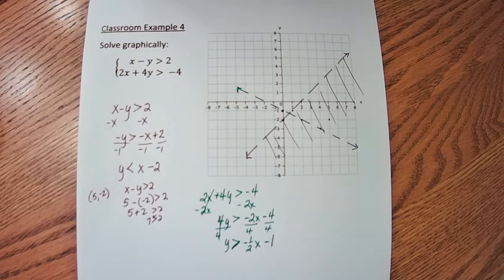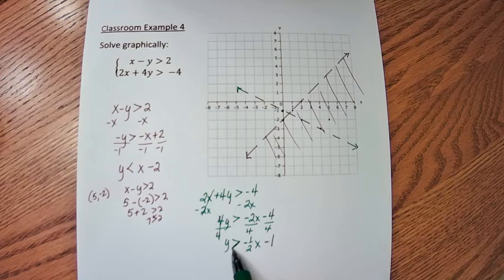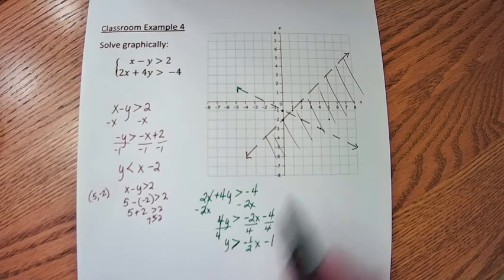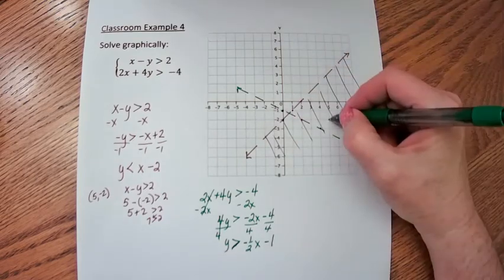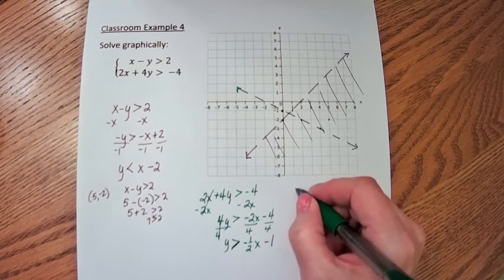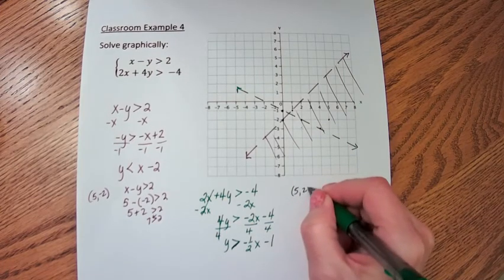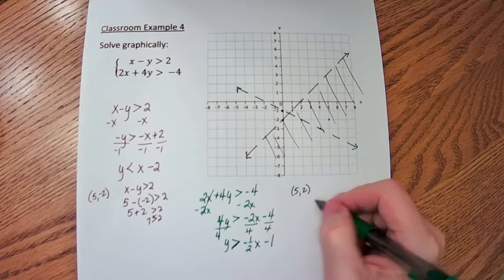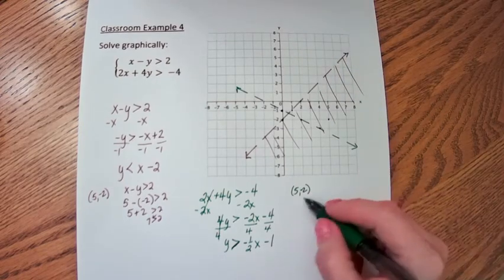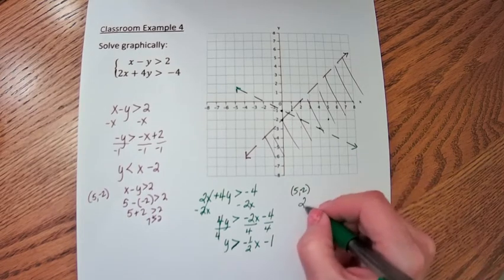Now we have to decide: are we going to shade above or below the line? Are my y values bigger than the line or smaller than the line? The y's are bigger above. So you know what, that point (5, 2)? I'm going to try (5, 2) as my test point. I'm sorry, (5, -2). I could use (5, 2) also. (5, -2) as my test point.